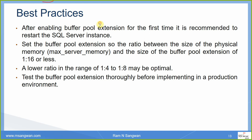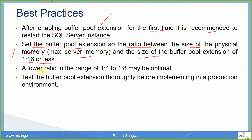Best practices: After enabling buffer pool extension for the first time, it is recommended to restart the SQL Server instance so it starts using it — similar to how a swap file works in an operating system, either enabled via command or set in FSTAB so it is active on every startup. The ratio between physical memory (max server memory) and the size of buffer pool extension should be 1:16 or less, though the maximum is 32 times. A lower ratio in the range of 1:4 to 1:8 may be optimal. Test the extension thoroughly before implementing it in a production environment.